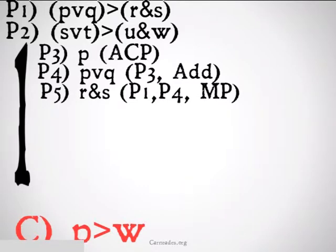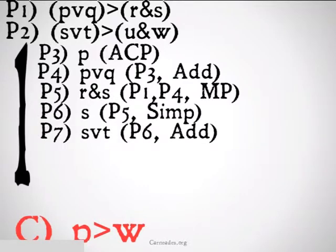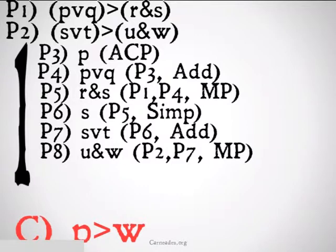We'll then use modus ponens to get R and S, premise one, four, modus ponens. R and S isn't going to be useful to us, but S or T will be, so we need to simplify this down to S, and then add on S or T, premise six, addition. We can then use S or T to get U and W, which we will do. Premise two, premise seven, modus ponens.